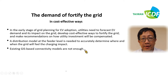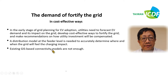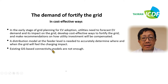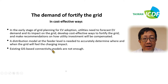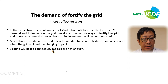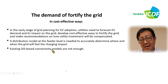Building more energy storage equipment increases the stability of the grid and deals with fluctuations in supply and demand from renewable energy and electric vehicles. In the early stage of grid planning for EV adoption, utilities need to forecast EV demand and its impact on the grid, develop cost-effective ways to fortify the grid, and make recommendations on how utility investment will be compensated. A distribution model at the feeder level is needed to accurately determine where and when the grid will feel the charging impact. Existing GIS-based connectivity models are not sufficient nowadays.